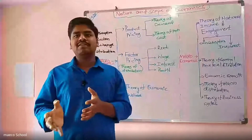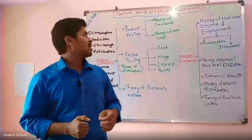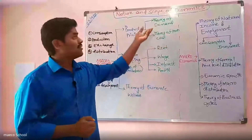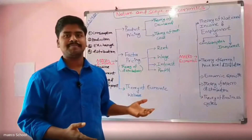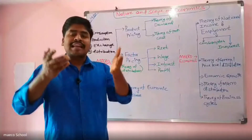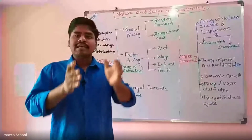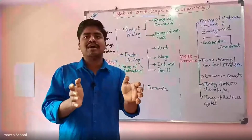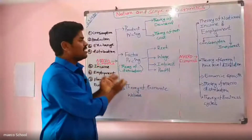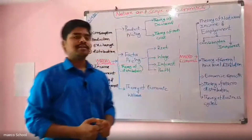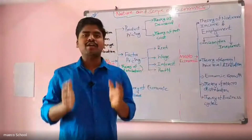In modern economics, there is the economist Ragnar Frisch who in 1933 divided economics into two branches: microeconomics and macroeconomics. Microeconomics is the study of individual firms and individual industries.